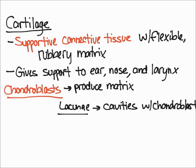Once the chondroblasts essentially become trapped in the lacunae, they are then referred to as chondrocytes. Something unique about cartilage is that it doesn't have blood vessels, which means it has to rely on diffusion in order to bring nutrients and to remove waste.